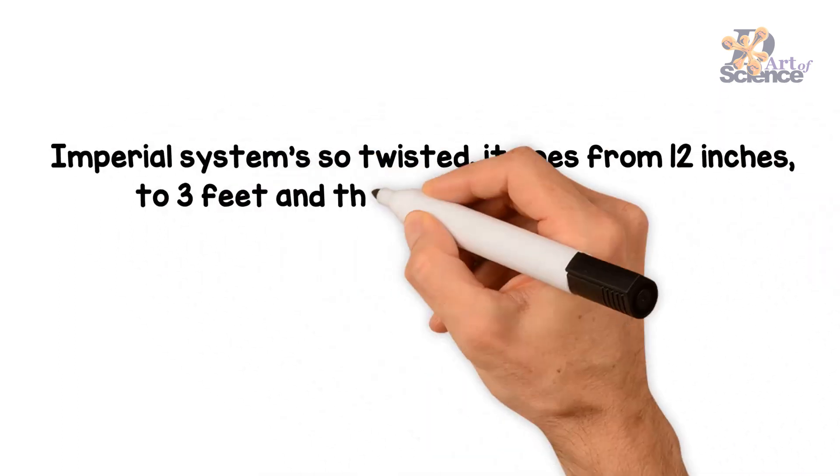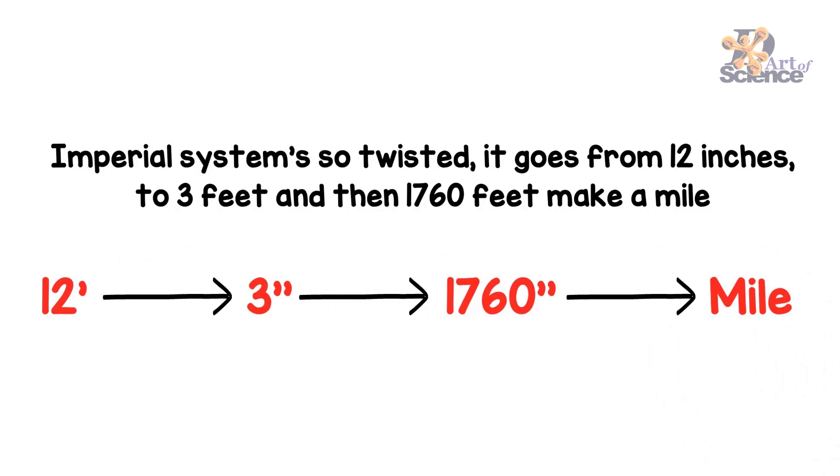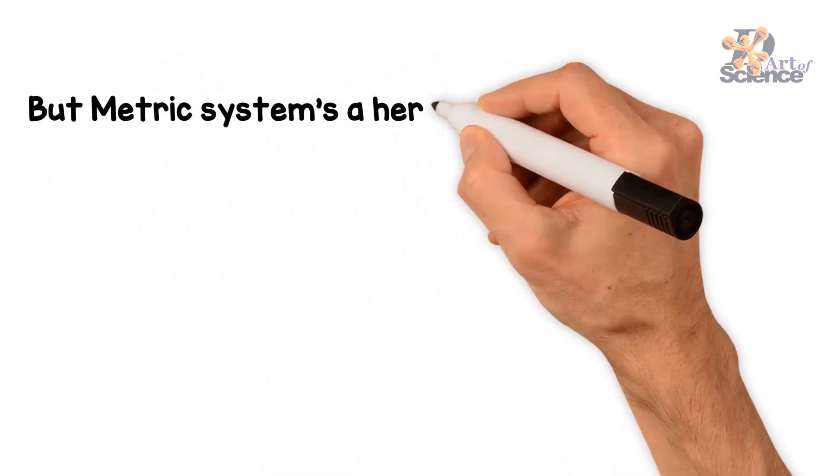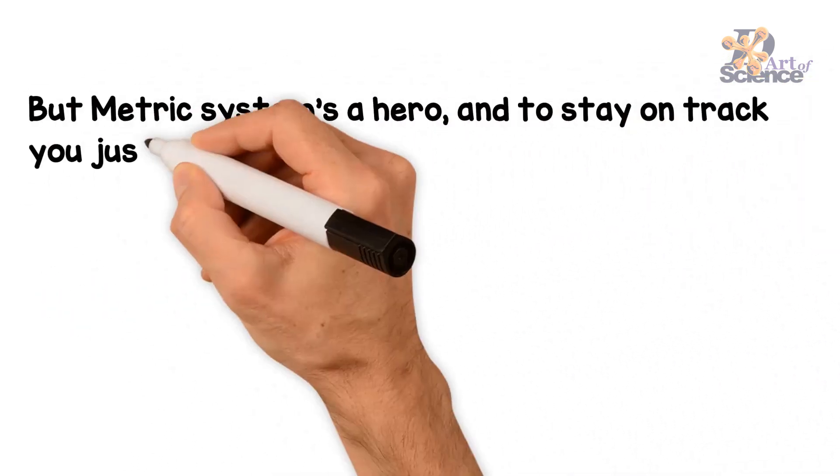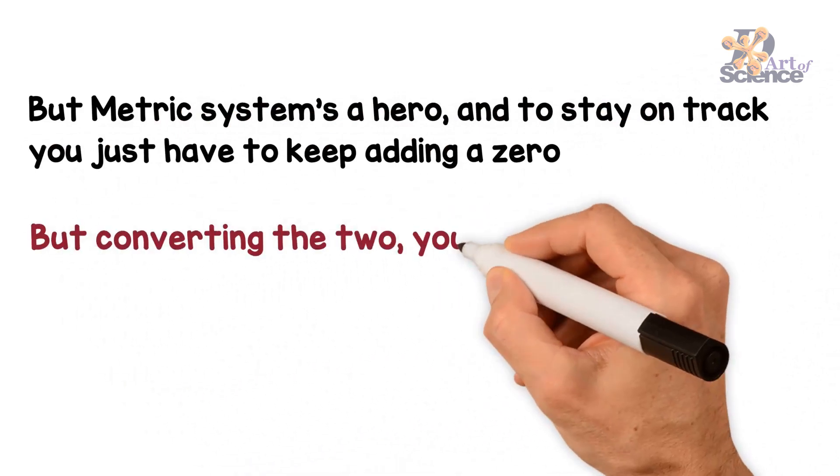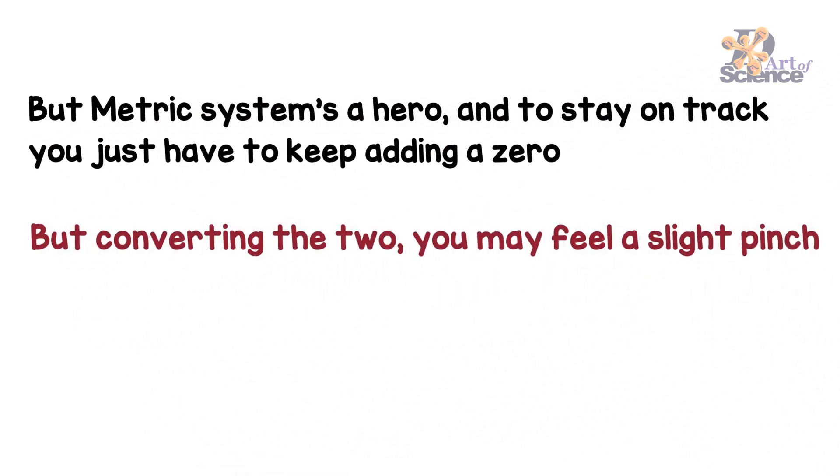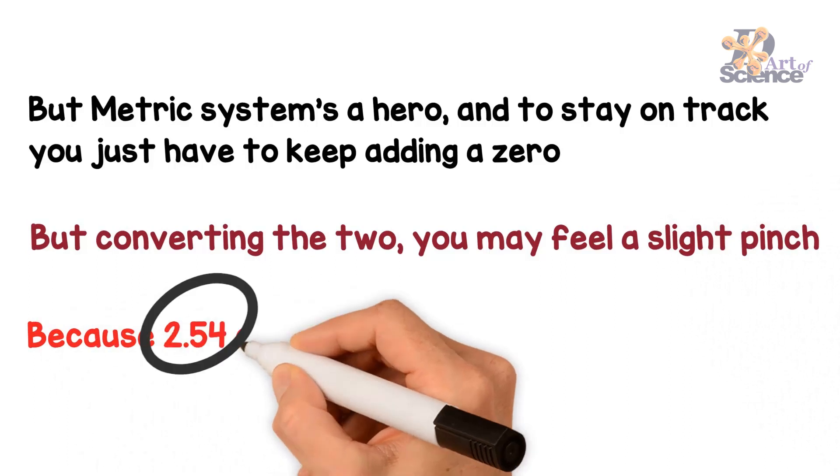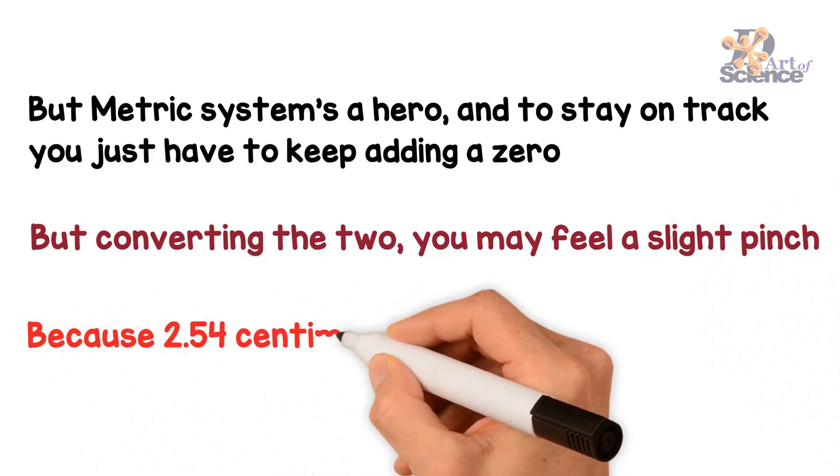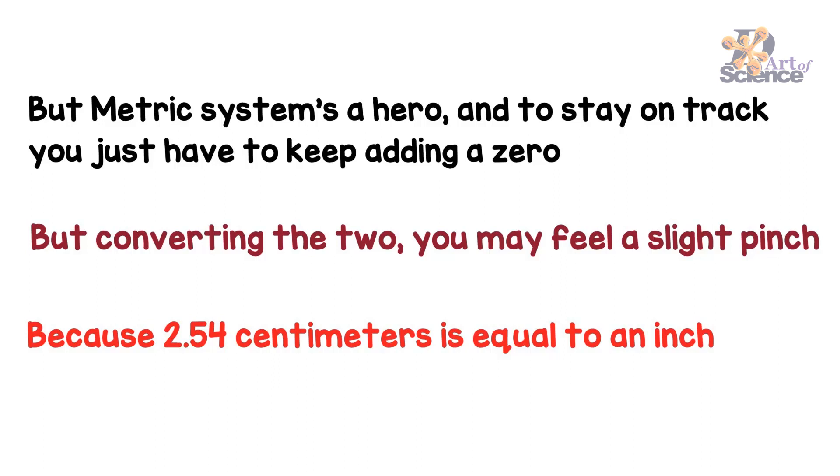Imperial systems so twisty. Going twelve and three and then a seventeen to sixty. But metric systems a hero. To stay on track just keep adding a zero. But converting the two, you may feel a slight pinch. 2.54 centimeters is equal to an inch. Got it.